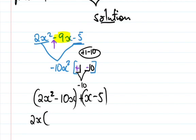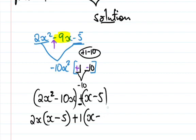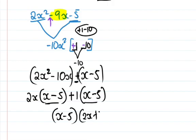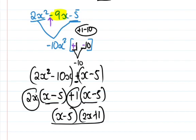From the first bracket, the common factor of 2x squared minus 10x is 2x, giving 2x(x minus 5). From the second pair, plus x minus 5, the common factor is 1, giving 1(x minus 5). You can see the bracket (x minus 5) appears in both, so taking out the common bracket gives (x minus 5)(2x plus 1).